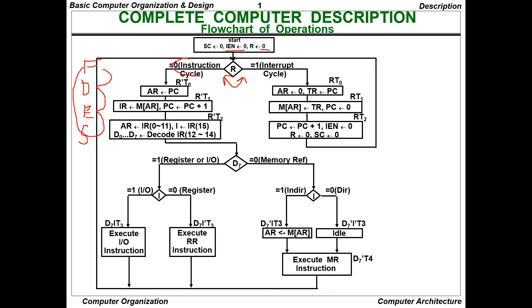At R-dash-T1, the PC gets incremented by one: PC ← PC + 1. Then M[AR] is transferred to IR — the address register holds the memory location and its contents are given to the instruction register. This is because the PC always points to the current instruction present at that memory address location.